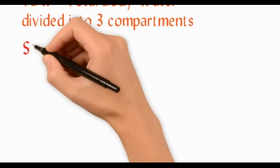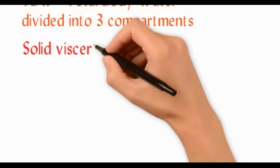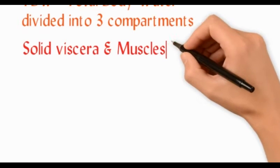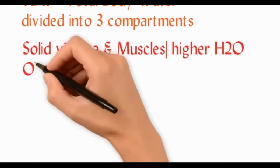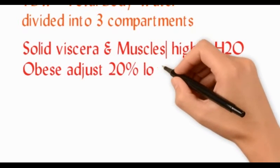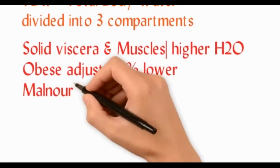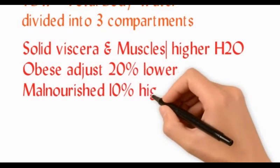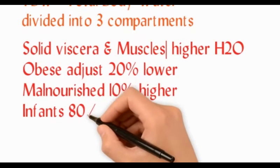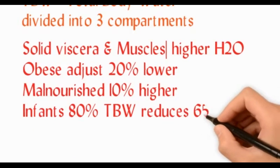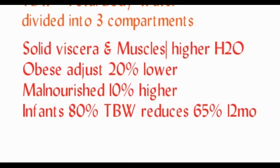Because solid viscera and muscles have higher water content, obese individuals who have more fat have a lesser amount of total body water, up to 20% lower. The malnourished have 10% higher TBW because of lesser fat. Infants have a maximum water content of 80% which reduces to 65% by the end of the first year.